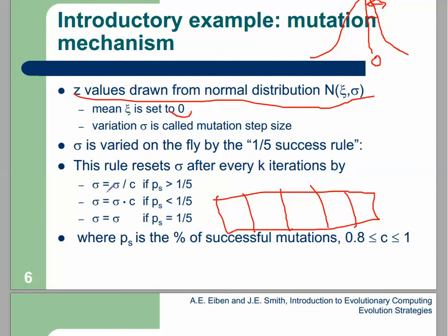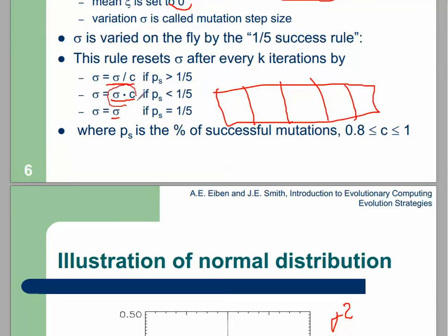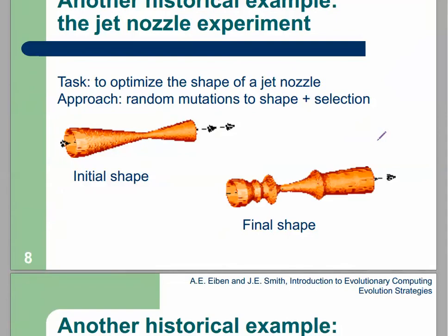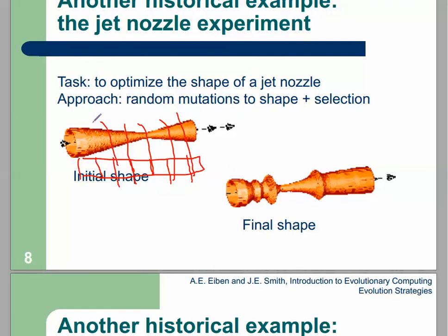Each iteration in the loop you may decrease sigma, increase sigma, or keep it the same. It is decreased or increased because C is lower than one. The thickness of this shape — for example 0.7, 0.2, 0.4 — is analogous to an individual or collection of genes, representing how the sigma controls the spread of mutation.